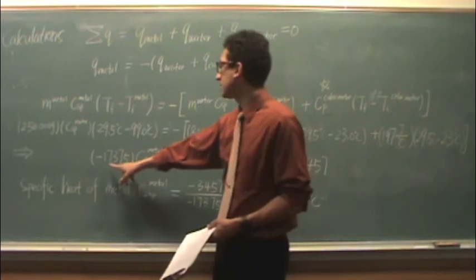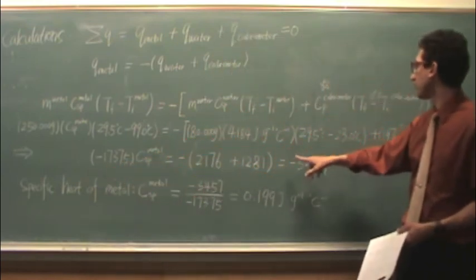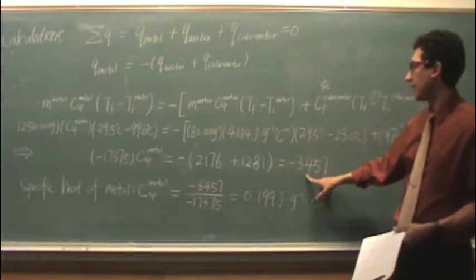And then just some simplification. Found that number, then found both of these numbers, and that equals negative 345.